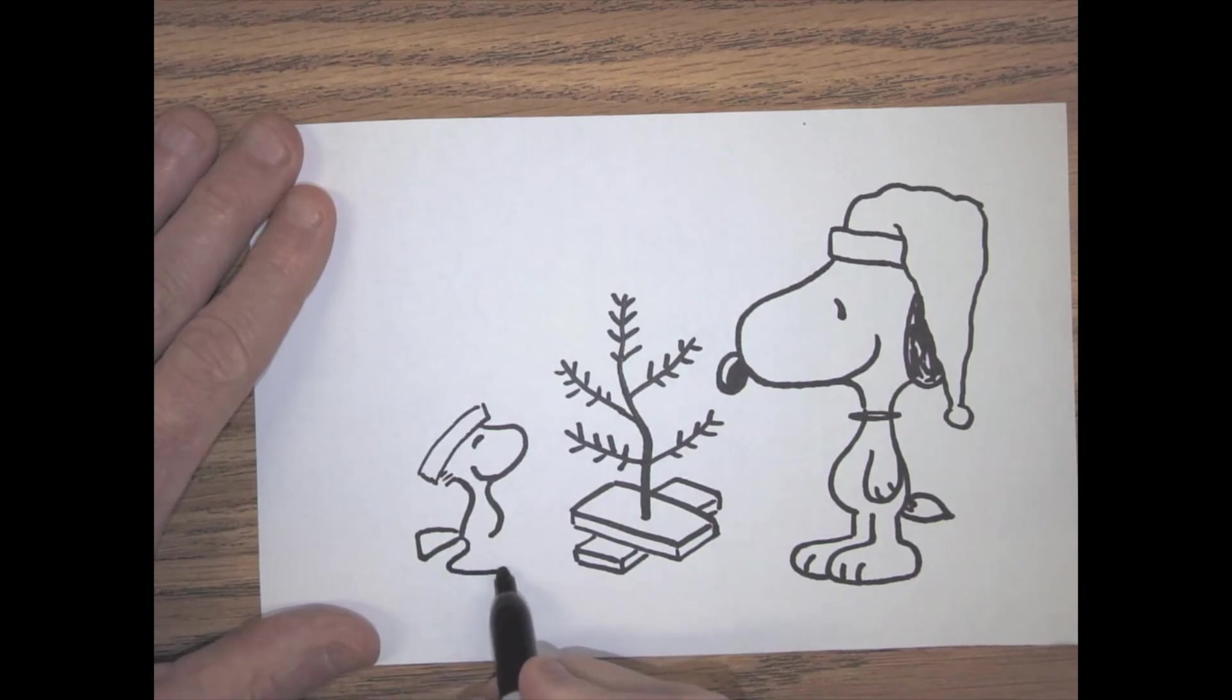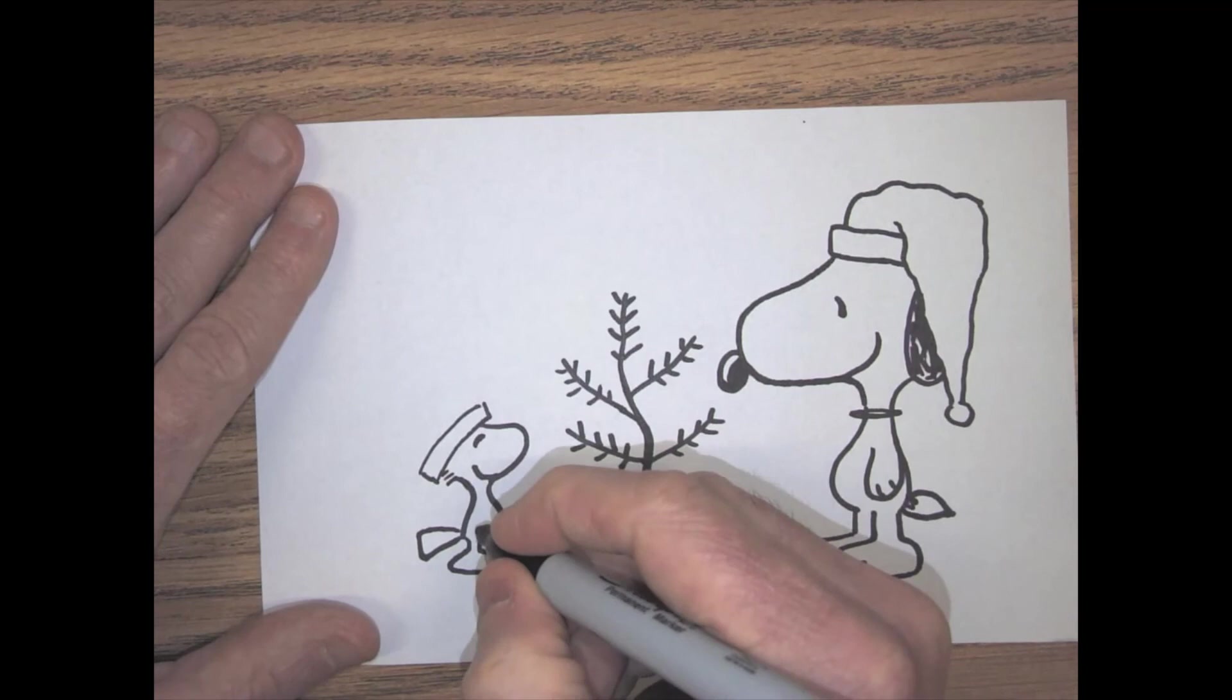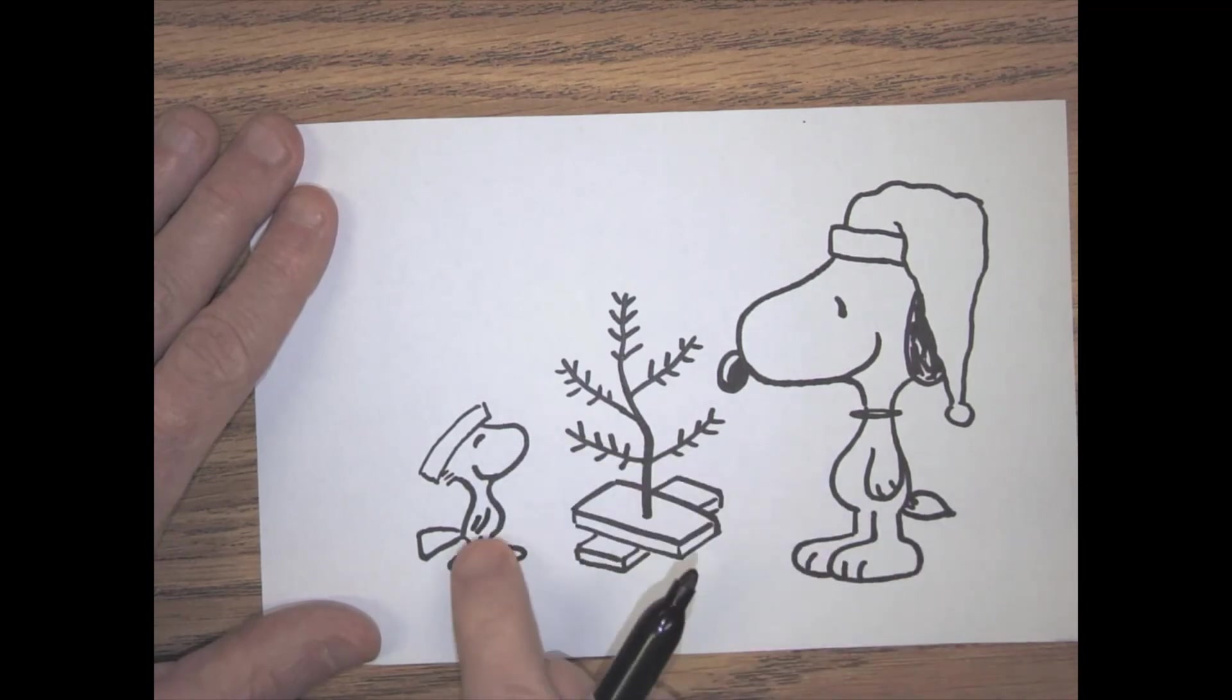And then we're going to put on his feet, and his feet are the same kind of foot as this. They come back and they go forward, and then they go up. Same thing happens with the other one. Down, forward, and back. You can see there's two feet there. Now as far as his feathers on his wings go, you can just put a couple little lines, and that'll look good enough.